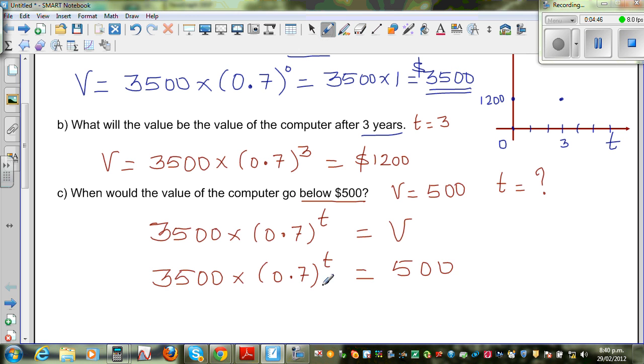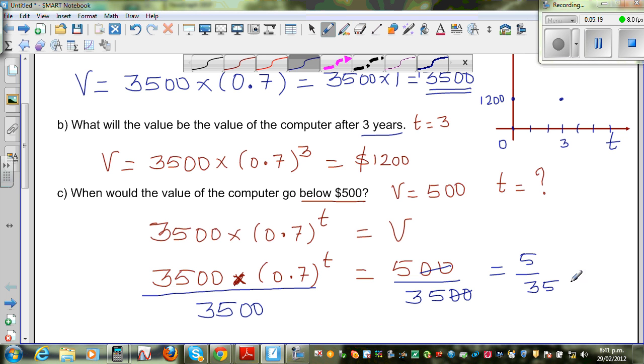So I want to get rid of this 3500, which is multiplied to this. So you do the opposite of that, which is dividing this side by 3500. If you do this on this side, you do the same thing on this side. So this on this gets cancelled. So this is 5 out of 35, which is 1 out of 7. I'm going to write this as 1/7.